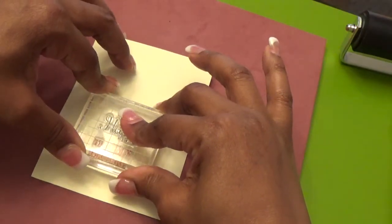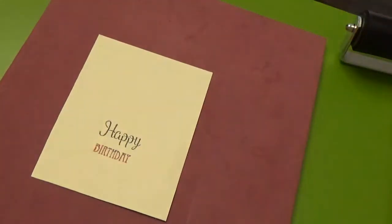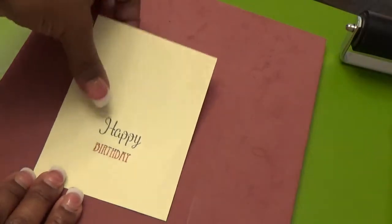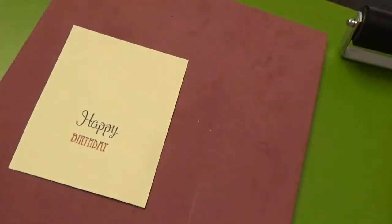We're going to stamp it on our piece so that we can punch it out. I leave mine for a second or two so the ink has time to transfer. And there we have it. I got some of the dark ink on the top of the word birthday, but I'm okay with that. I think that's absolutely adorable.